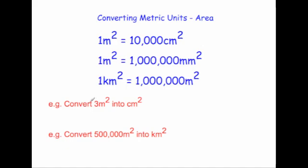Let's look at two typical questions. Convert three meters squared into centimeters squared. One meter squared is 10,000 centimeters squared, so multiply three by 10,000: three times 10,000 is 30,000 centimeters squared. So three meters squared is 30,000 centimeters squared.